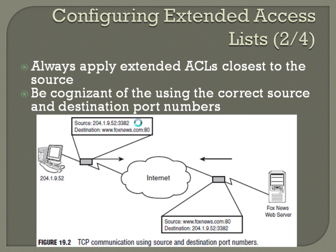Up to 1024 are the known common port numbers — it's going to pull from something after that that's not a commonly used one. So if you were pulling up multiple webpages, say you've got multiple tabs open, the fact that it has a different source port number is how the browser knows to pull up a certain webpage on that tab and not a different tab. 3382 might be applied to the first tab, 3383 to the next tab — that's how it keeps track of what should be processing what when it comes back.